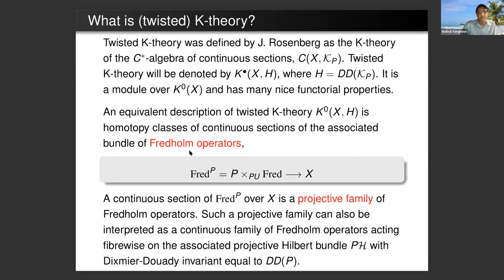The twisted K-theory will sometimes be denoted by K-theory of X_H where H is the Dixmier-Douady class of this bundle of compact operators. It turns out to be a module over the K-theory of X and has nice functorial properties. An equivalent and important description of twisted K-theory is as homotopy classes of continuous sections of an associated bundle of Fredholm operators.